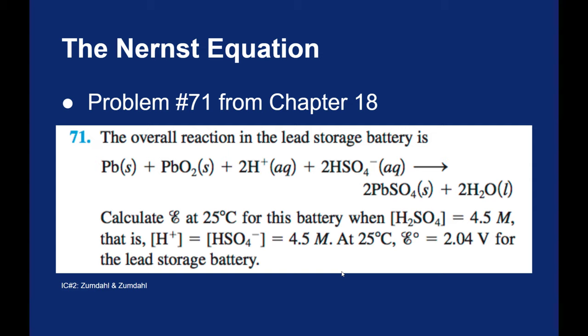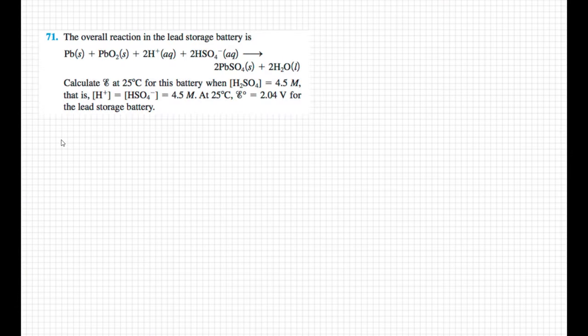This is problem 71. We're going to look at a lead storage battery run at non-standard conditions. Temperature is standard 25 degrees Celsius, but we have a concentration of 4.5 molar instead of the 1 molar that would be standard for solutions. This is an interesting reaction that happens in a lead storage battery. If we look at our oxidation states, lead is starting out as neutral. But as a reactant, I also have lead 4 oxide, so lead is a plus 4.